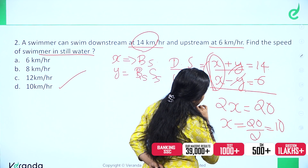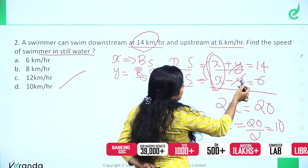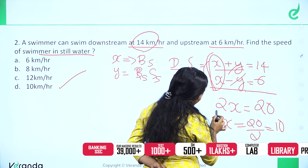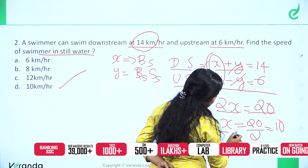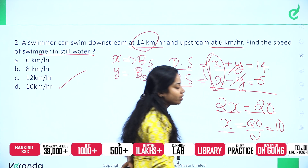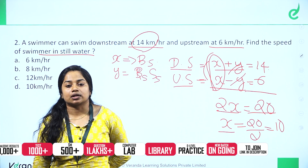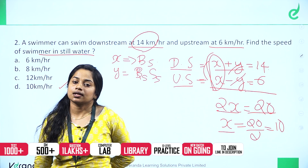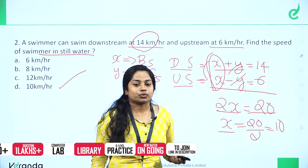Adding x plus y equals 14 and x minus y equals 6, we get 2x equals 20. Therefore x equals 20 divided by 2, which is 10 km per hour. That is the speed of the swimmer in still water.